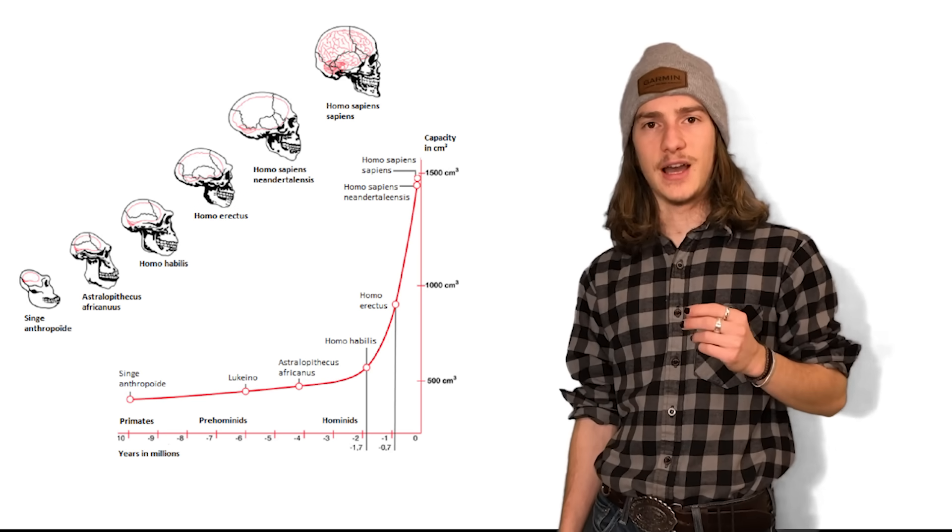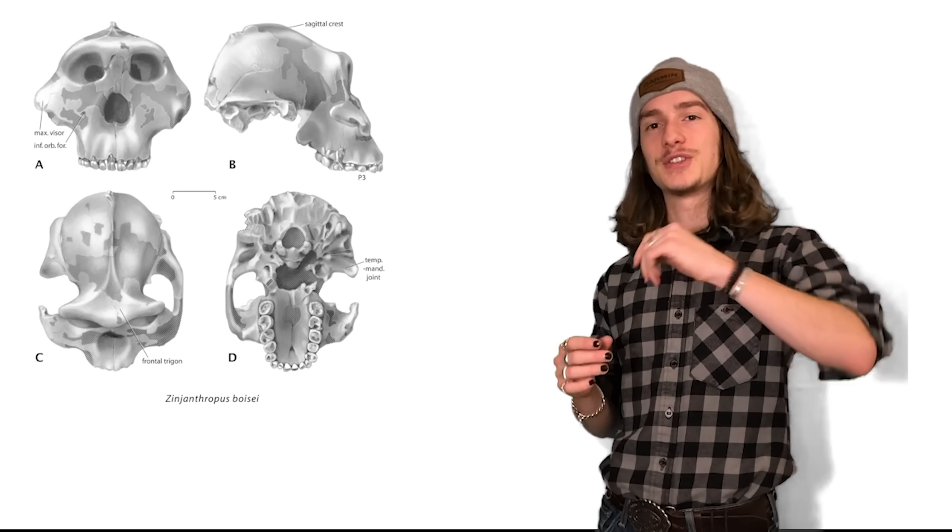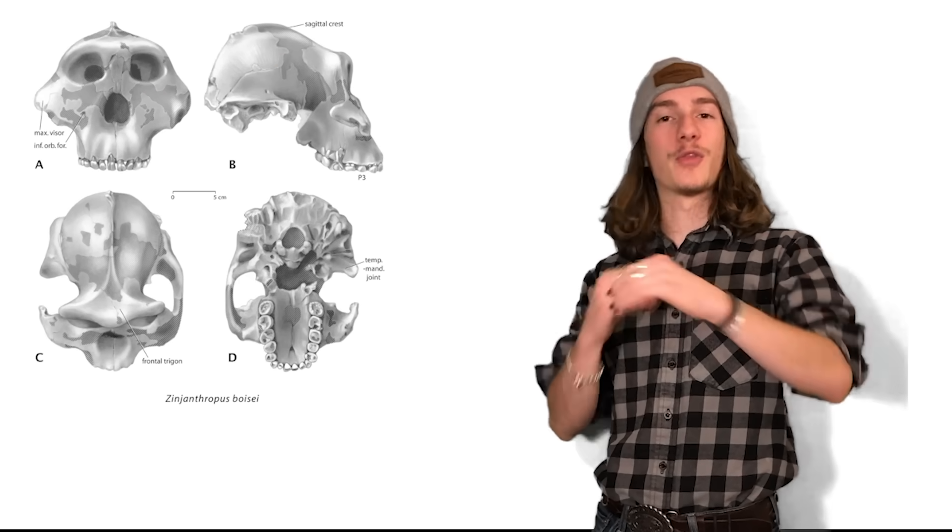Including a discovery from 1959 by Mary and Louis Leakey that was nicknamed Zinj. They would go on to name the species Zinjanthropus boisei before changing the name to everyone's favorite, Paranthropus boisei. In fact, the skull of Zinj was so complete that it went on to become the holotype for the entire species.